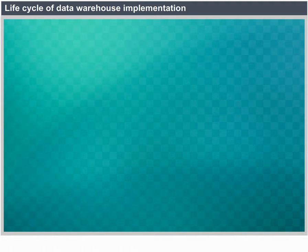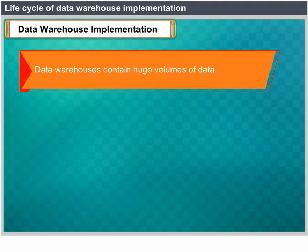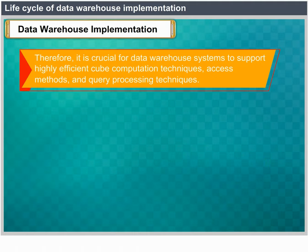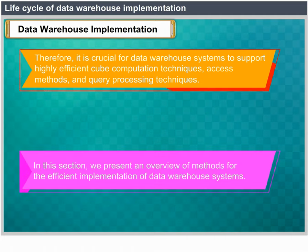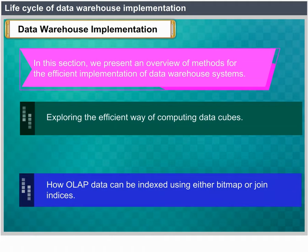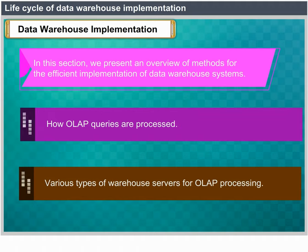Life cycle of data warehouse implementation. Data warehouses contain huge volumes of data, and OLAP servers demand that decision support queries be answered in the order of seconds. Therefore, it is crucial for data warehouse systems to support highly efficient cube computation techniques, access methods and query processing techniques. This section presents an overview of methods for efficient implementation, covering: how to compute data cubes efficiently, how OLAP data can be indexed using bitmap or join indices, how OLAP queries are processed, and various types of warehouse servers for OLAP processing.